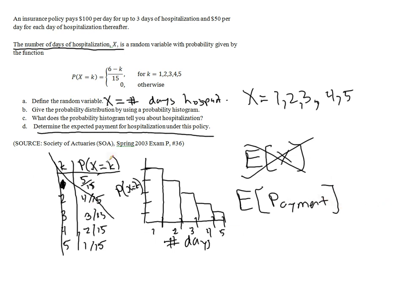So the expected payment, well, we would have to look at what the payments are. So if you're in the hospital for one day, they're going to pay out $100. If you stay in the hospital for two days, they're going to pay $100 for that second day as well, so in total, they paid out $200. And they'll do that until the third day, after which time, they'll only pay $50.